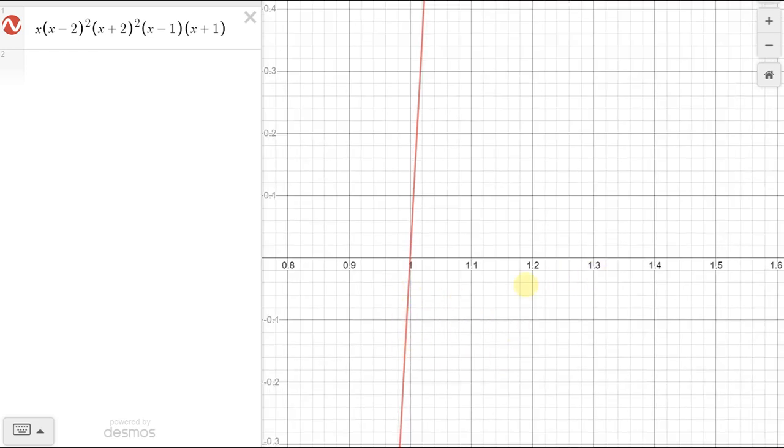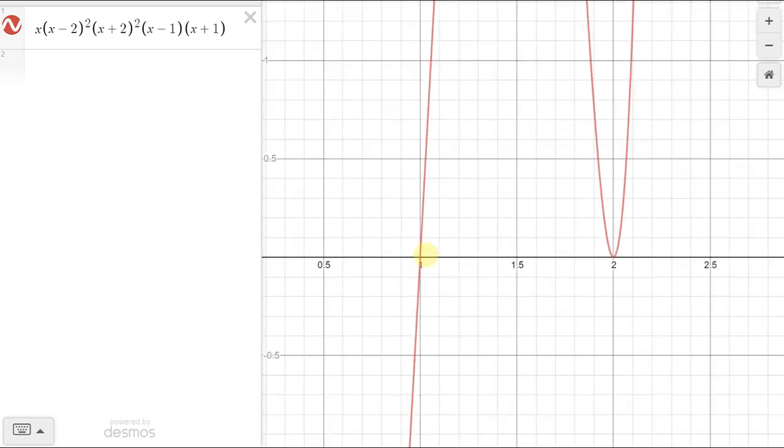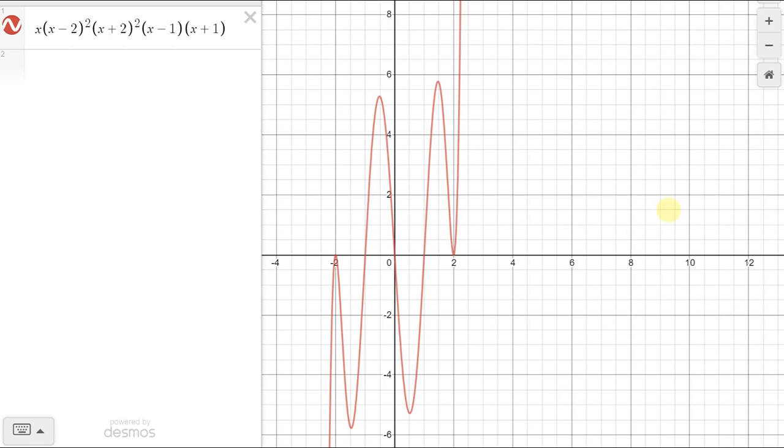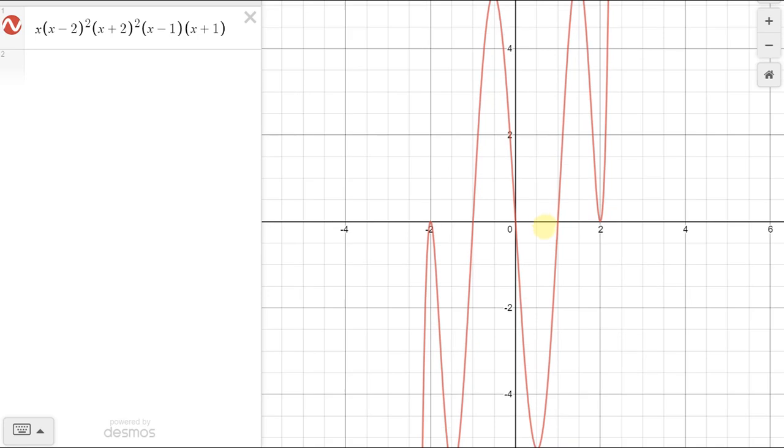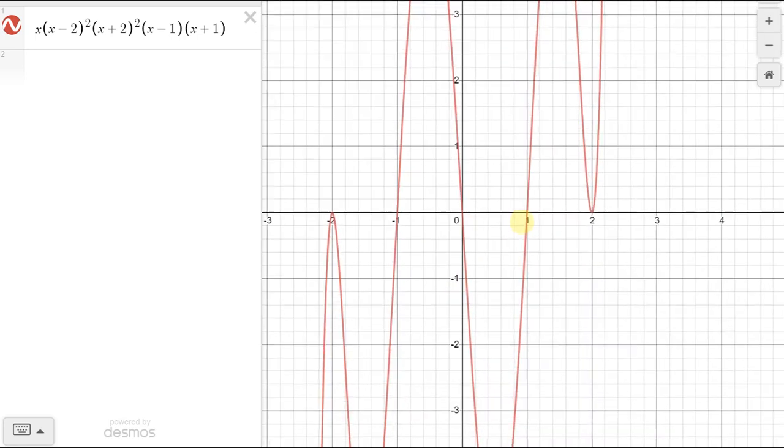And plugging in a decimal into the function of a line is much simpler than plugging it into this entire monstrosity, right? This would be kind of a pain. So linearization basically takes a point, so it takes an area of the graph, so in this case somewhere near 1,